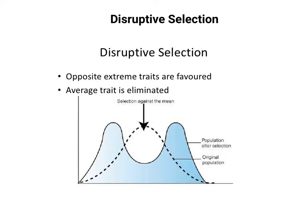Nature is going to choose against that middle trait. So this is the original population — the dotted line — and nature is choosing the two extremes over the middle. The deer that automatically darts away survives; the one that freezes survives; but the one in between, that doesn't know what to do, gets hit. You see a reduction in that particular population trait.